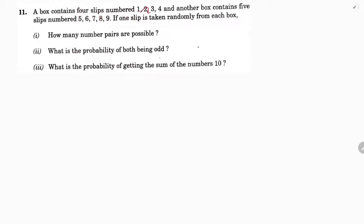A box contains four slips numbered one, two, three, four, and another box contains five slips numbered five, six, seven, eight, nine. If one slip is taken out randomly from each box, how many number pairs are possible? So from the first box we have the numbers one, two, three, four, and in the second box we have five, six, seven, eight, nine.